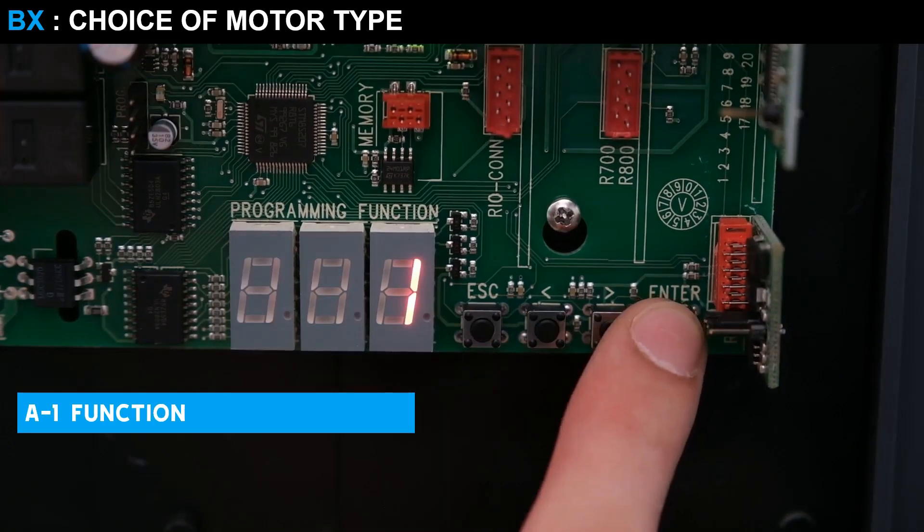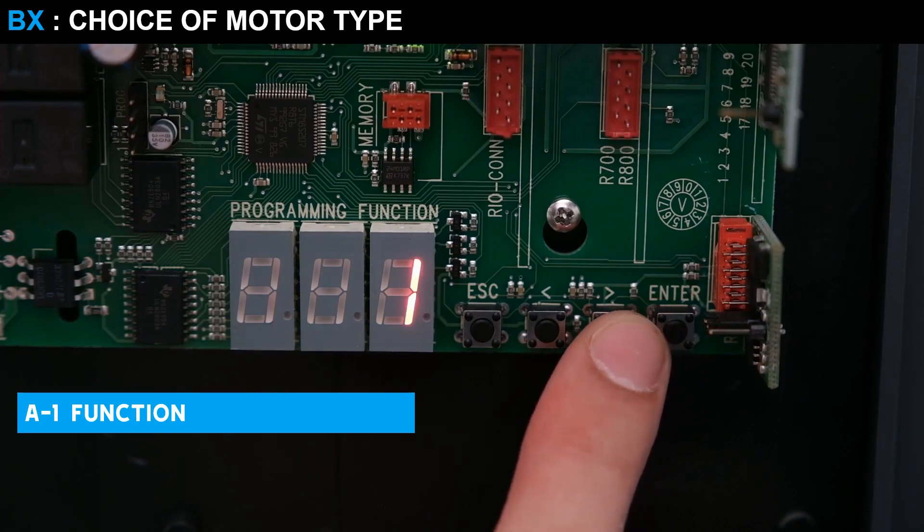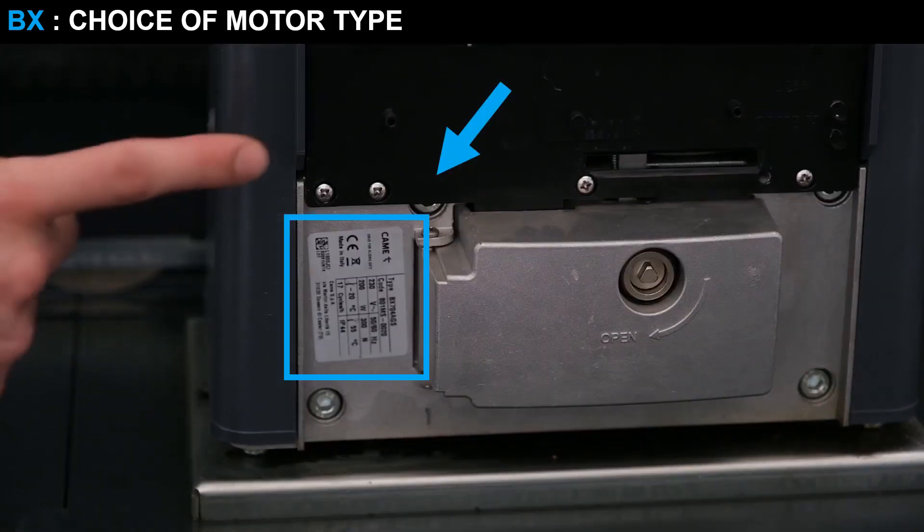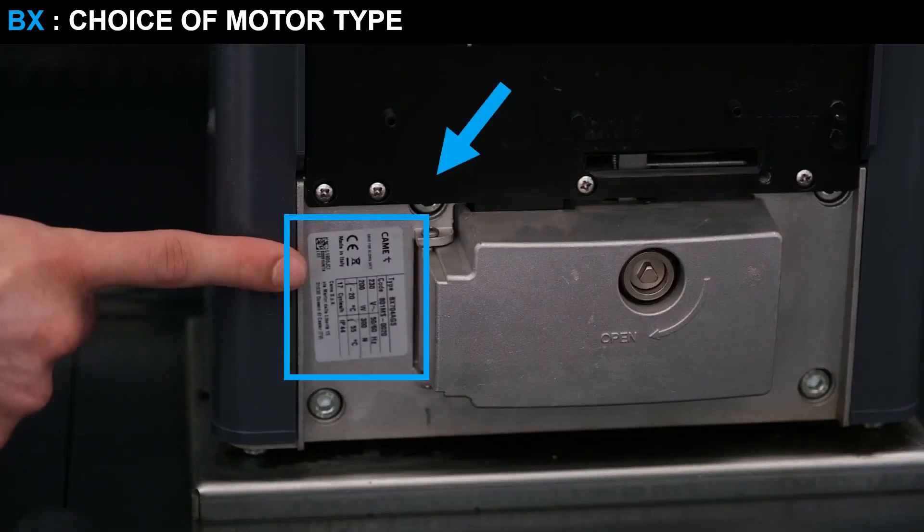Press Enter, and select the value corresponding to the engine model used. The automation code is found on a label located on the side of the motor.